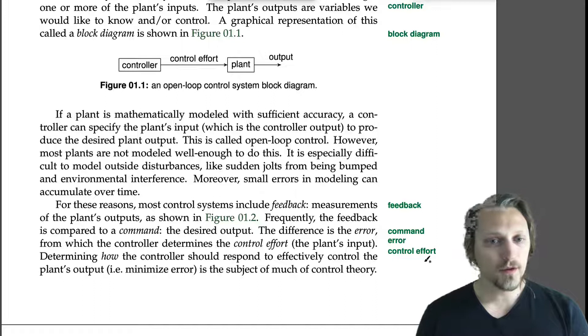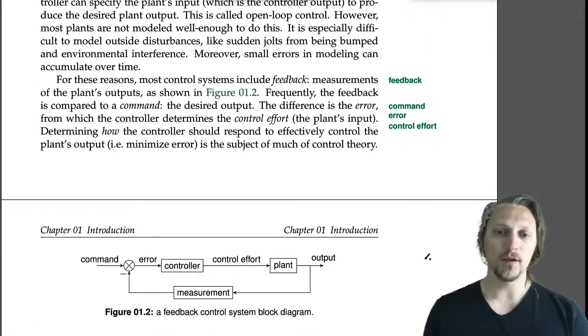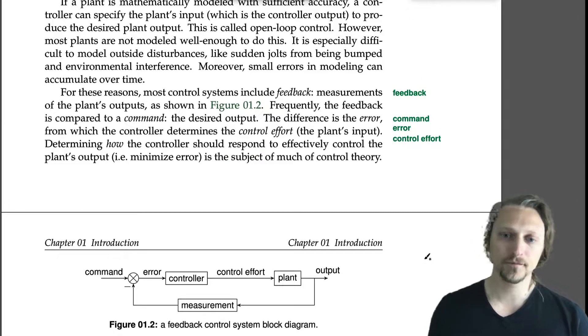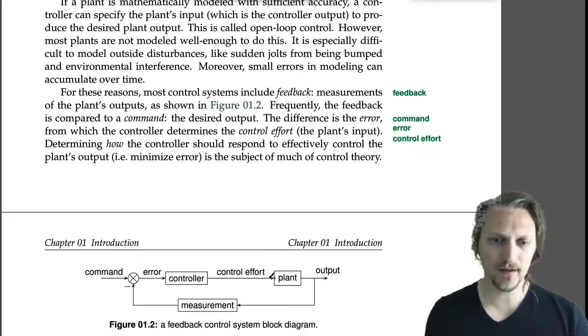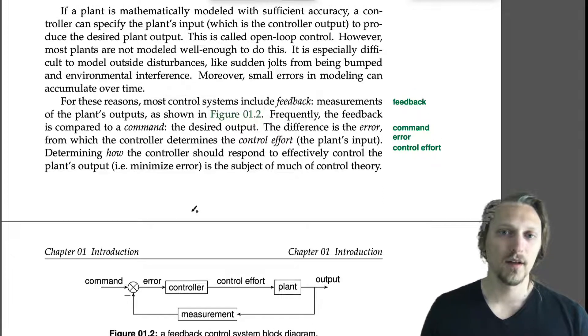But for these reasons, most control systems include feedback, measurements of the plant's outputs as shown in Figure 1-2. So we have the plant's outputs and we're actually going to measure them. So this is called feedback. So we measure the outputs of the plant and we feed them back and we'll do something within the controller there.